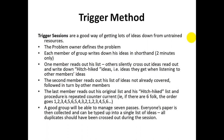If there are 6 participants, the order goes 1, 2, 3, 4, 5, 6, then 5, 4, 3, 2, 1, then 2, 3, 4, 5, 6. A good group will be able to manage 7 passes. Everyone's paper is then collected and typed up into a single list of ideas. All duplicates should have been crossed out during the session.